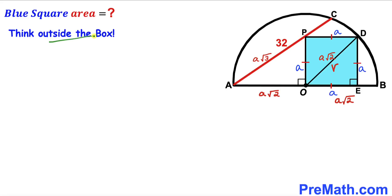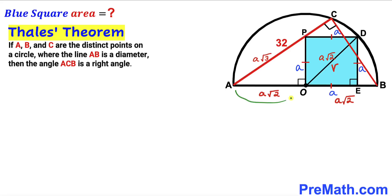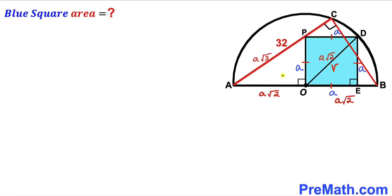Now let's think outside the box. I have connected point B with point C. Recalling Thales' theorem: if A, B, and C are three distinct points on a circle and AB is a diameter, then angle ACB is a right angle — that is, 90 degrees. Here, A, B, and C are three distinct points on the semicircle where AB is the diameter. Therefore, angle ACB is 90 degrees, meaning triangle ABC is a right triangle.